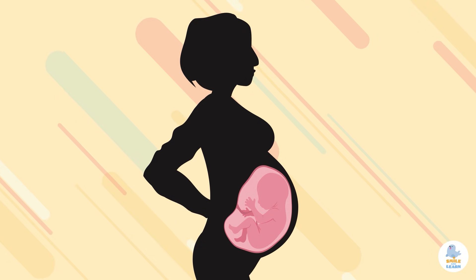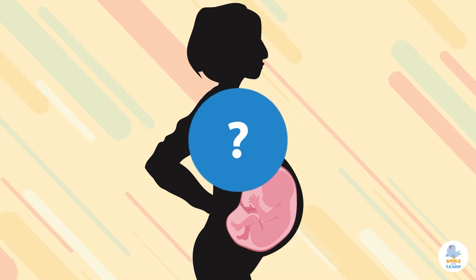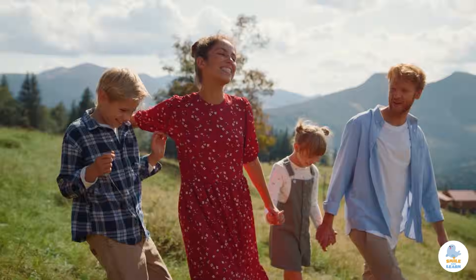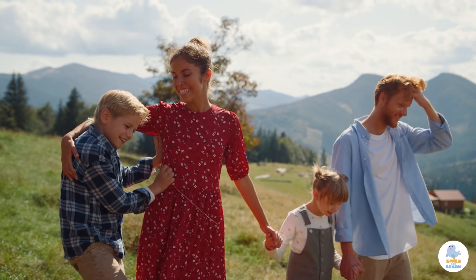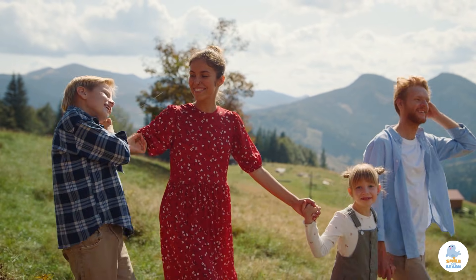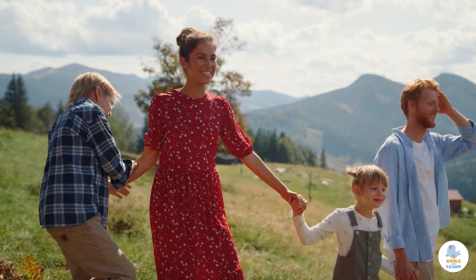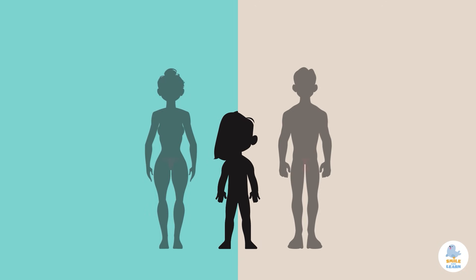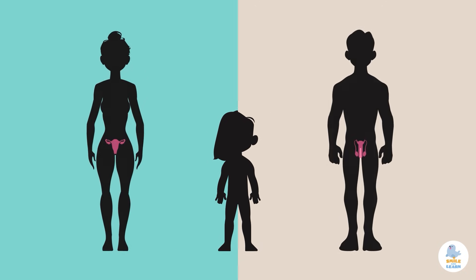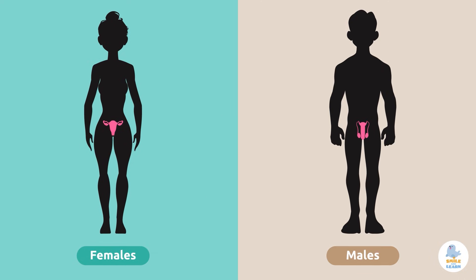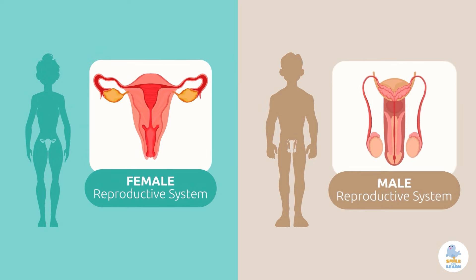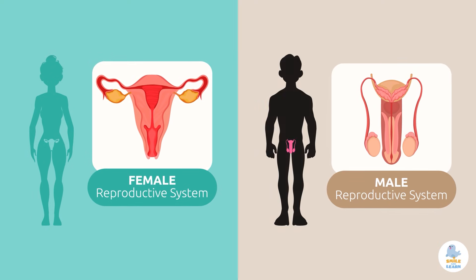What system do you think performs this function? Very good — the reproductive system! As human beings grow older, our sexual characteristics become more and more differentiated. This process begins at puberty, when we develop the secondary sexual characteristics that differentiate females and males physically. The reproductive system can be female or male, depending on whether it's a female or male body.